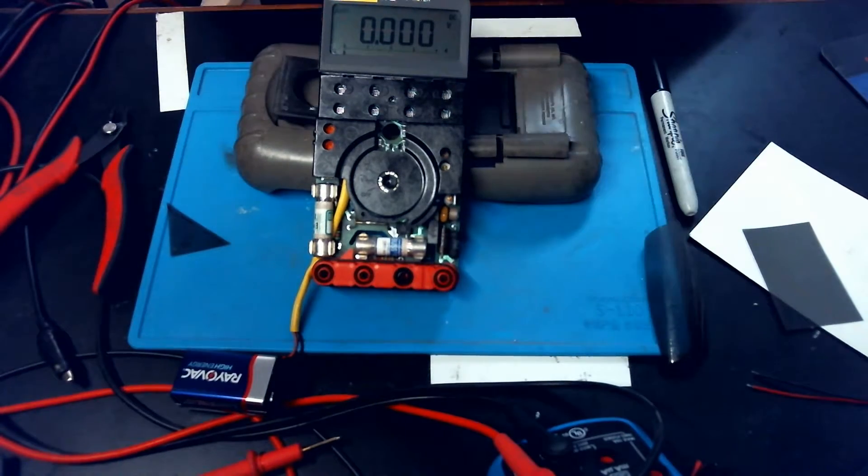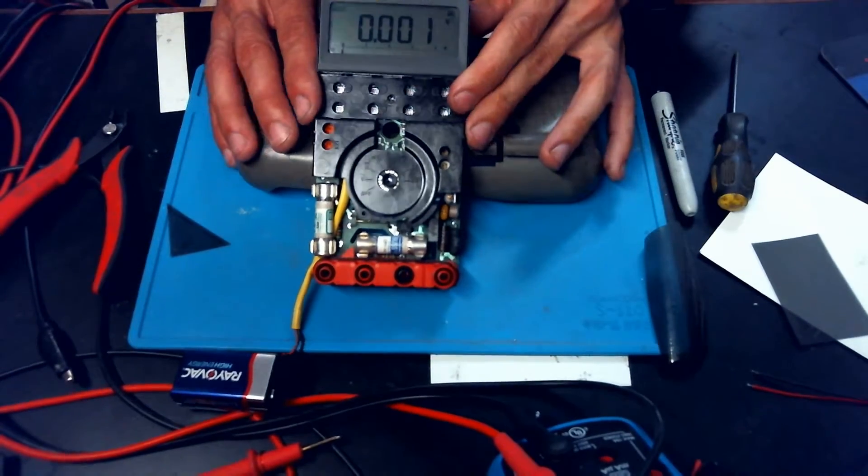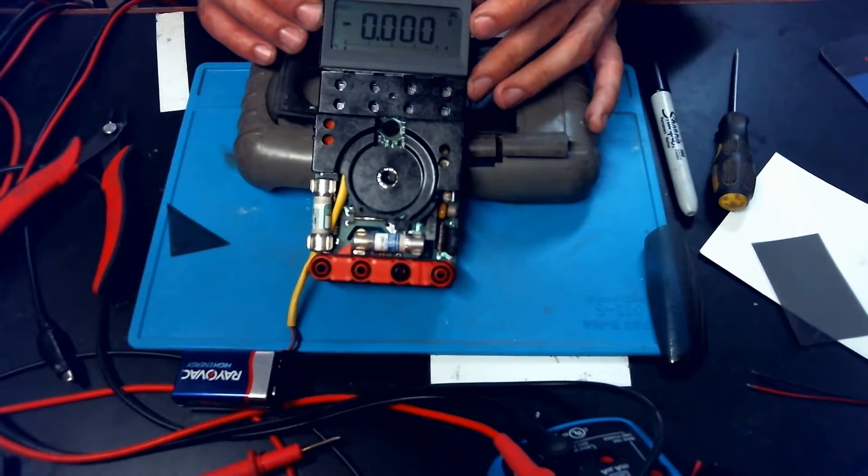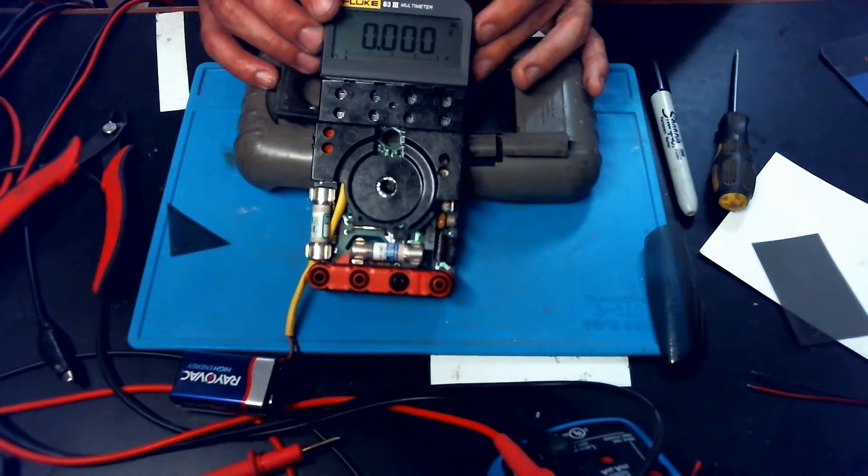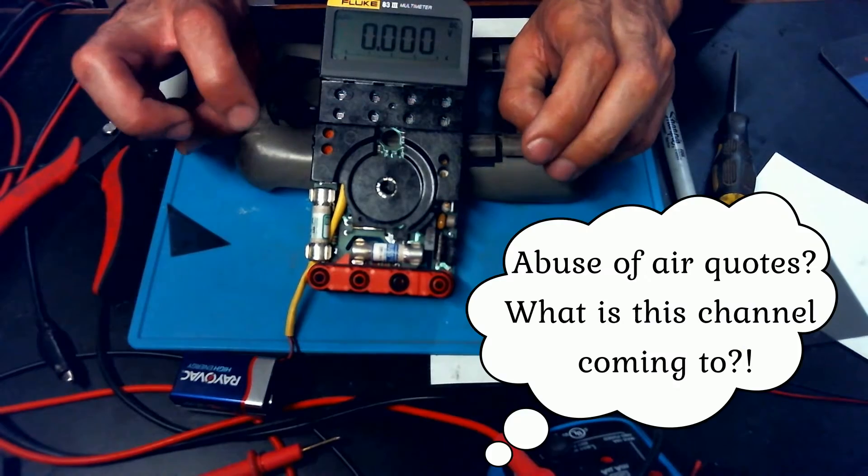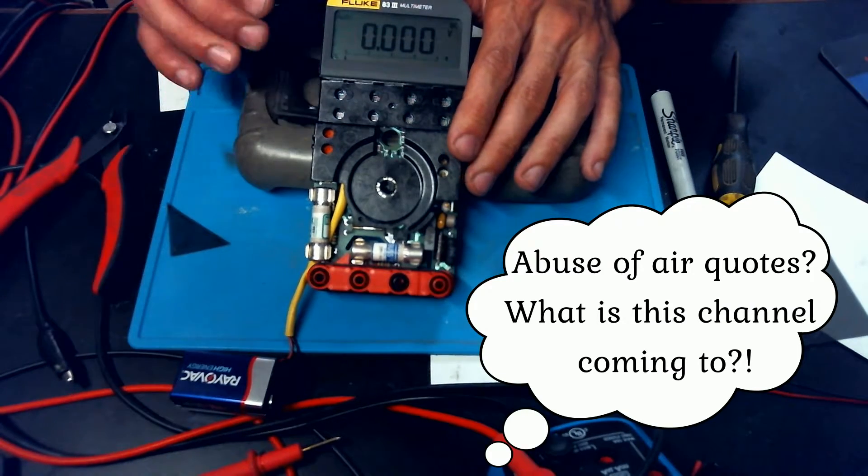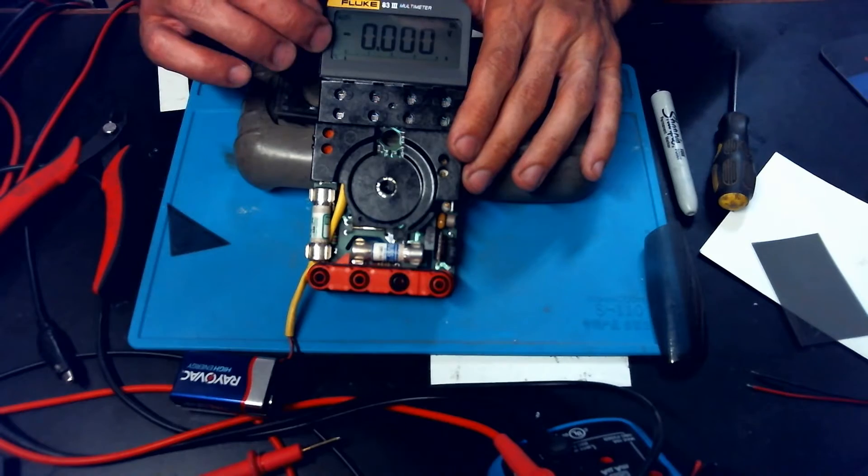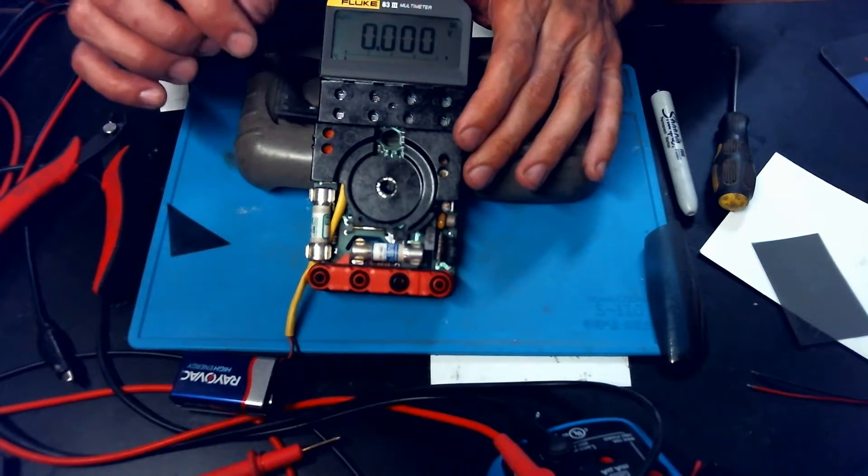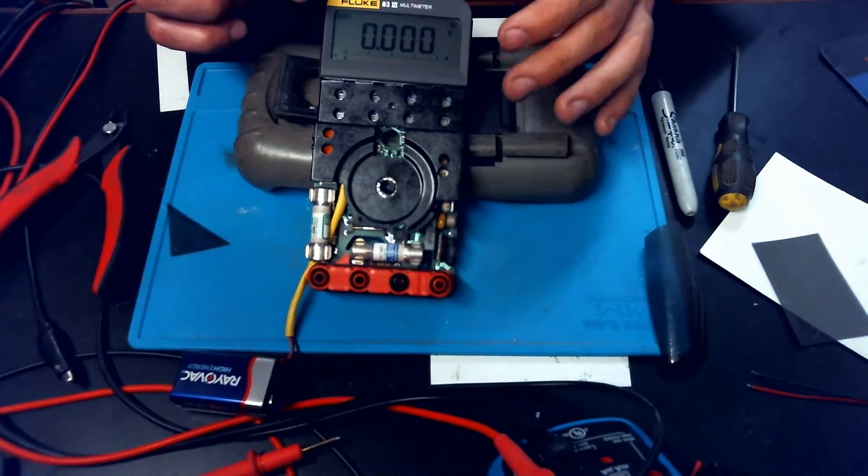But it's probably going to end up bothering me, so I think I will eventually redo this repair and we'll do it properly with a clear optical adhesive, a polarizing film that has no adhesive on it, cut it to the correct size.